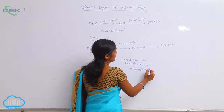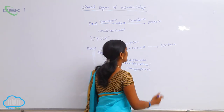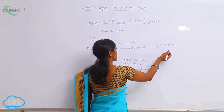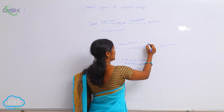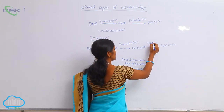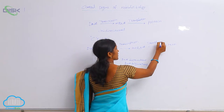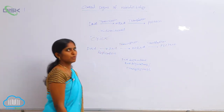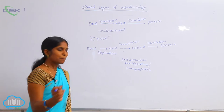Next, mRNA to protein: the genetic information is carried towards the protein by the process of translation. This is unidirectional in most organisms.